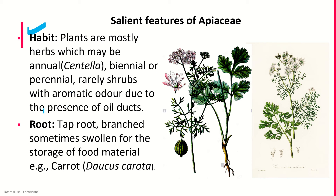The gynoecium is bicarpellary — meaning two carpels are present — syncarpous, inferior, bilocular with a single pendulous ovule in each locule. Antero-posteriorly placed; placentation is axile and two styles are present with two stigmas. On top of the ovary, an epigynous glandular stylopodium is present. The fruit in APSC is a schizocarpic cremocarp, which splits into two one-seeded mericarps attached to a slender, often forked axis called the carpophore. Mericarps are longitudinally ridged; in between the ridges are furrows having oil ducts or vittae. Seeds are endospermic with a small embryo.